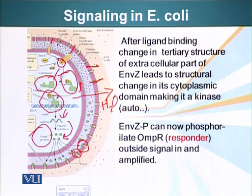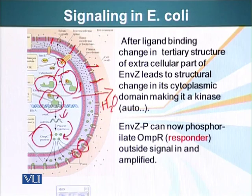A couple of things I would like to clarify. The activity of this enzyme NZ — putting a phosphate group on itself — is called autophosphorylation. NZ, once it becomes active, phosphorylates OMP-R. So OMP-R is basically responding to the change in NZ structure. Therefore, it is called a responder in this scenario.